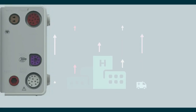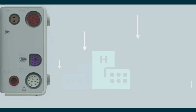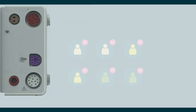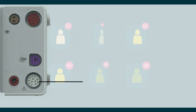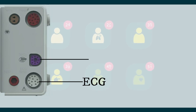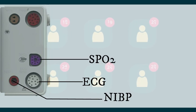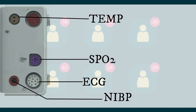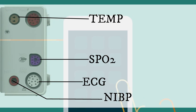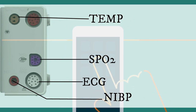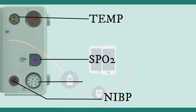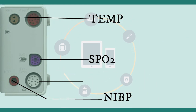Let's begin with basic vital sign monitors. This type of monitor consists of ECG, SPO2, NIBP, and temperature. Basically, this type of monitor is used in day case and outpatient departments in the hospital.